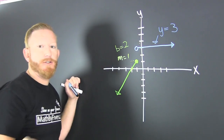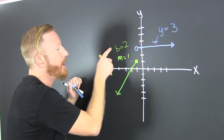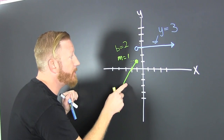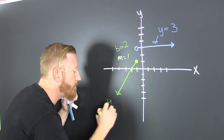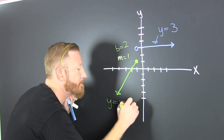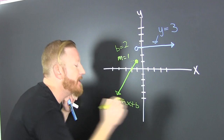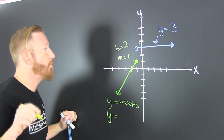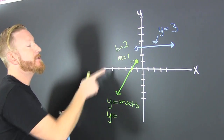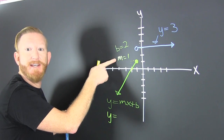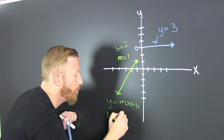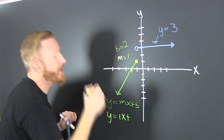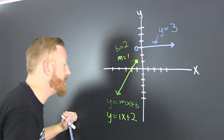There should be some harder examples, but this is what we have here. If we're looking for the equation of this line, we can put it in y equals mx plus b. In that form, our slope is one, so we have one x plus two.